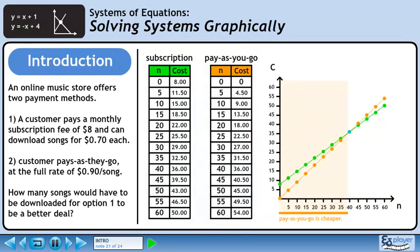Returning to our graph, we can see that between 0 and 40 songs, not having a subscription is more cost effective. At exactly 40 songs, there is no difference between the two options. If more than 40 songs are downloaded, the subscription package will be a better deal.